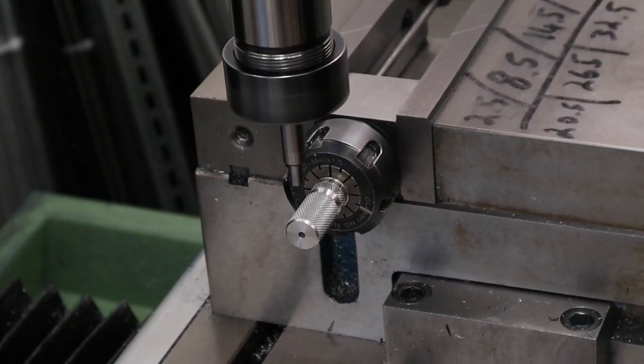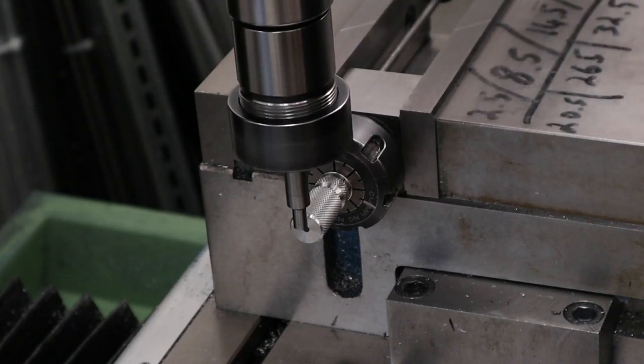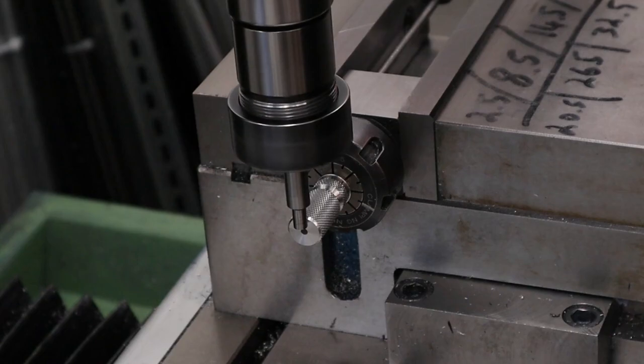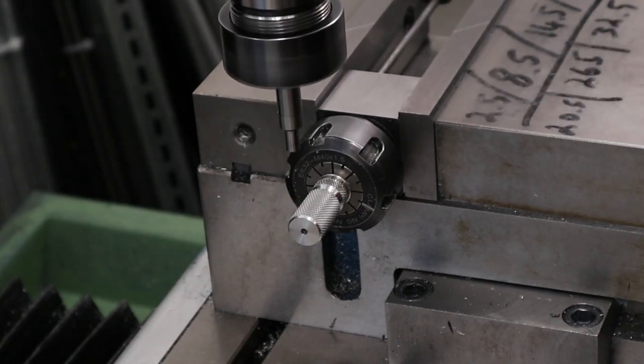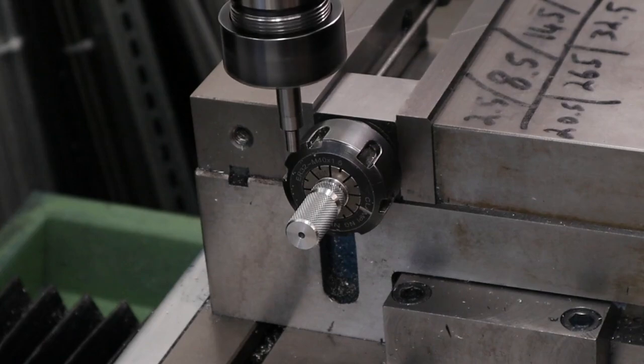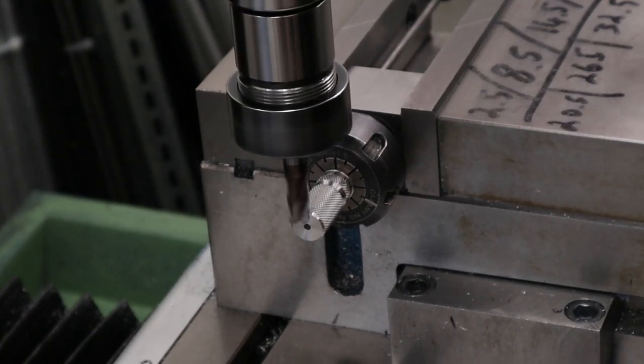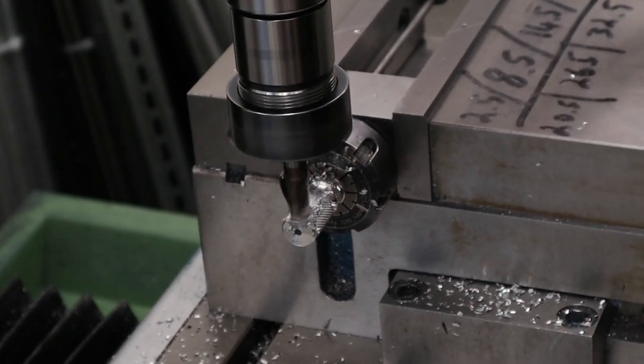With that done we can move over to the exposed end of the work and locate the X position. Again just touching the tool on the work, feeding in until we see the edge finder wobble off of centre and then zeroing out our position. As we're not using the half function in this application we do have to compensate for the diameter of the tool. Once we've got our zero position we have to feed in half the diameter of the tool, in this case 3mm, and that gets the centre line of the spindle on the very outer edge of the work.